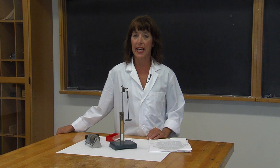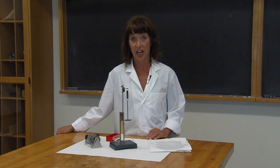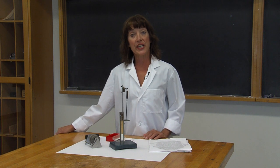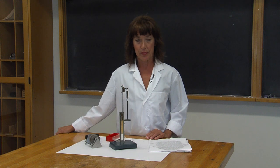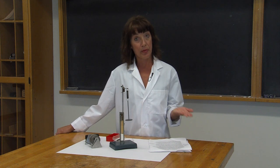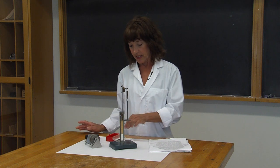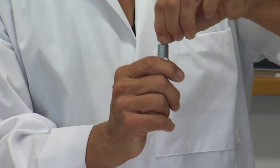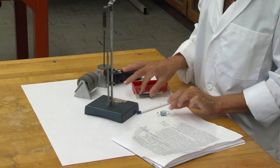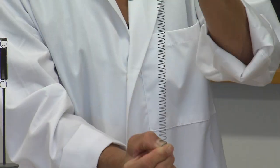In this lab we will calculate a property of springs called the spring constant. This property is proportional to the stiffness of the spring, so the higher the spring constant, the stiffer the spring. This spring, for example, is very stiff and has a higher spring constant than a spring like this which is loose.